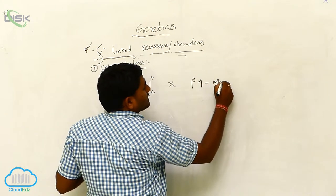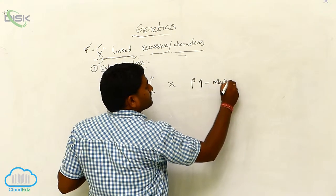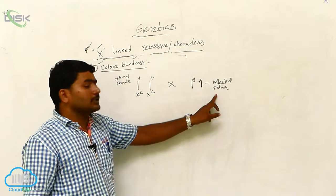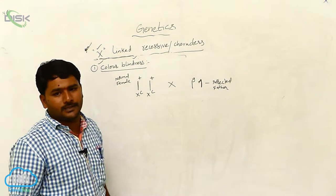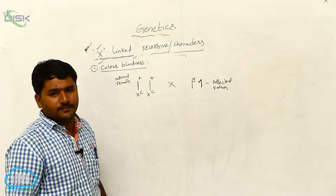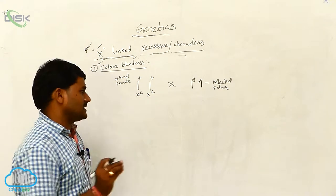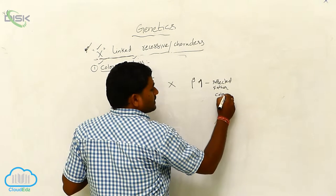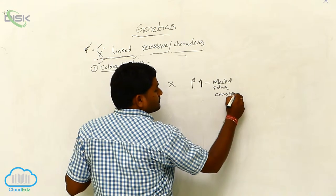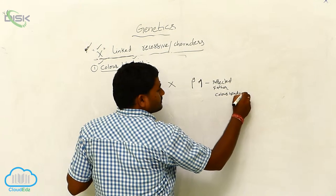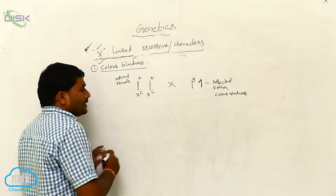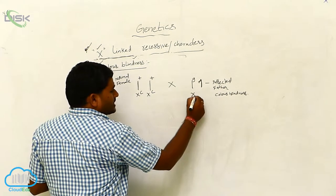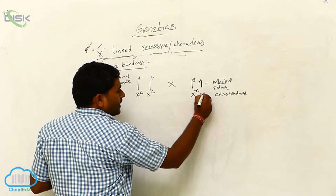Father affected means diseased father, which has color blindness. When you take the cross, you can consider X capital C and Y.